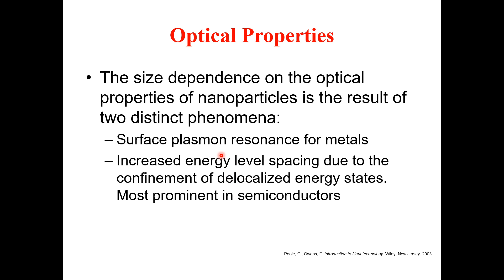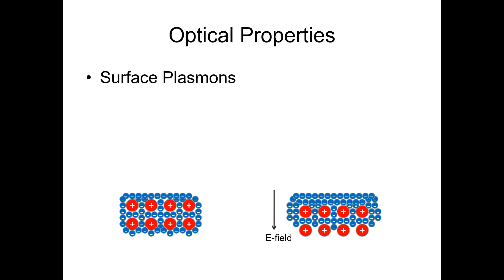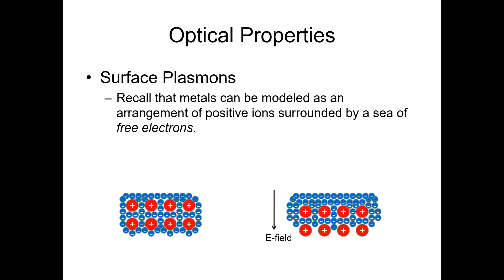Let us start from surface plasmons. To understand this concept, we have to recall that matter can be modeled as an arrangement of positive ions surrounded by a sea of free electrons, just as you can see in the figure here. These positive ions are surrounded by this sea of free electrons.